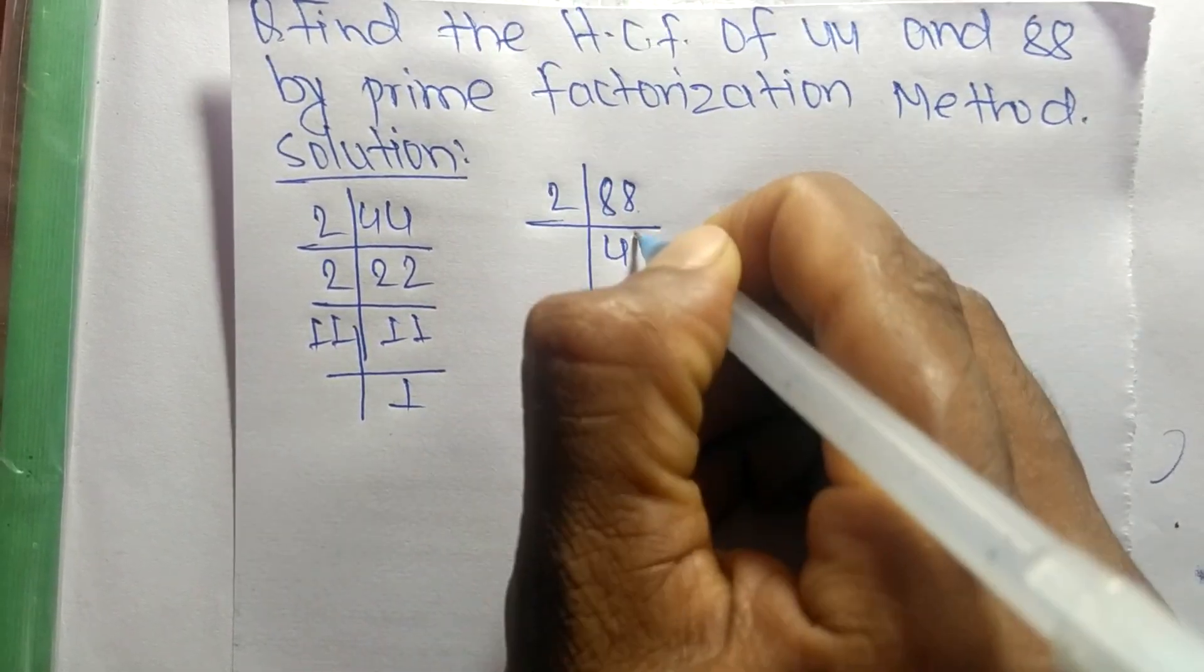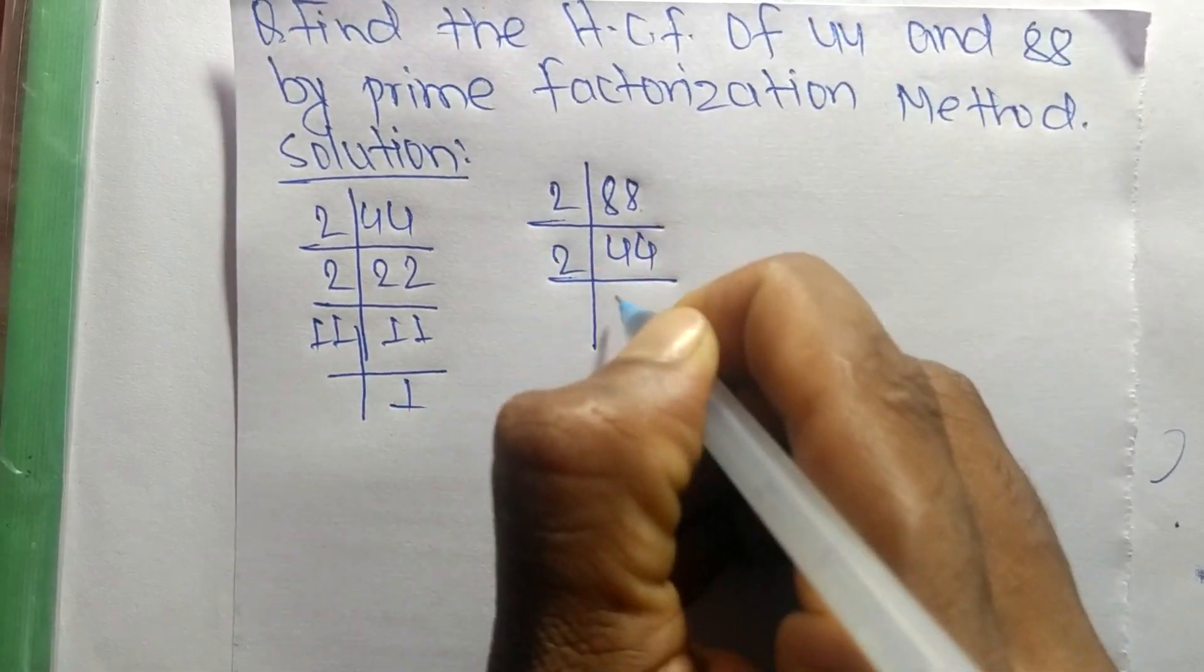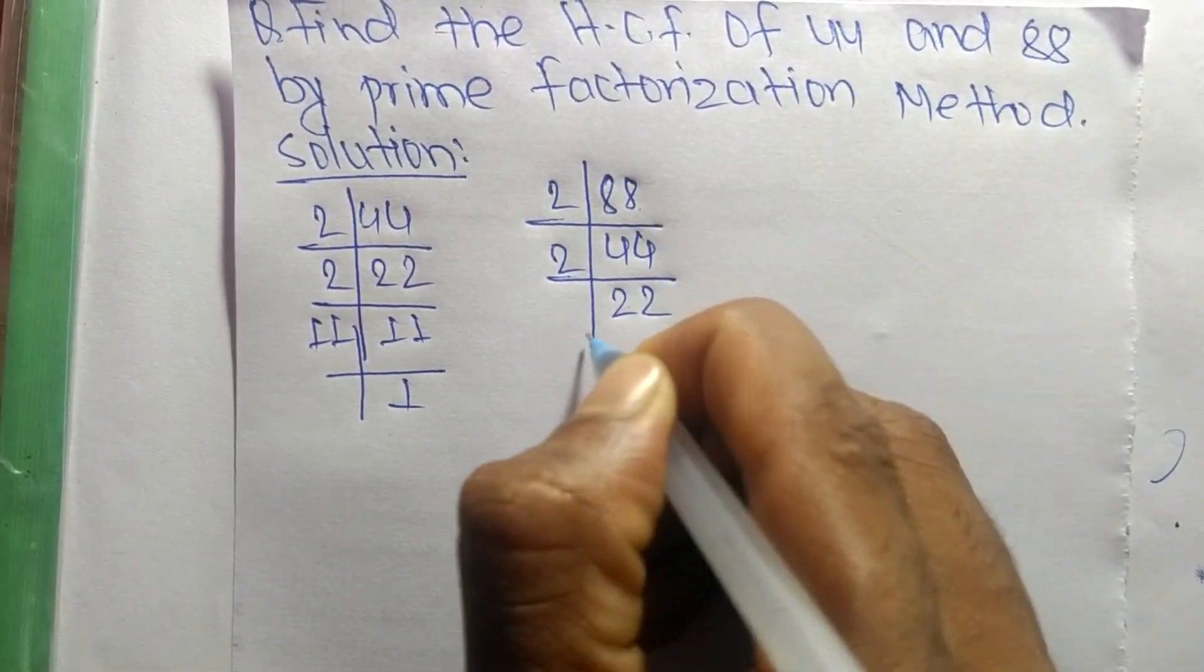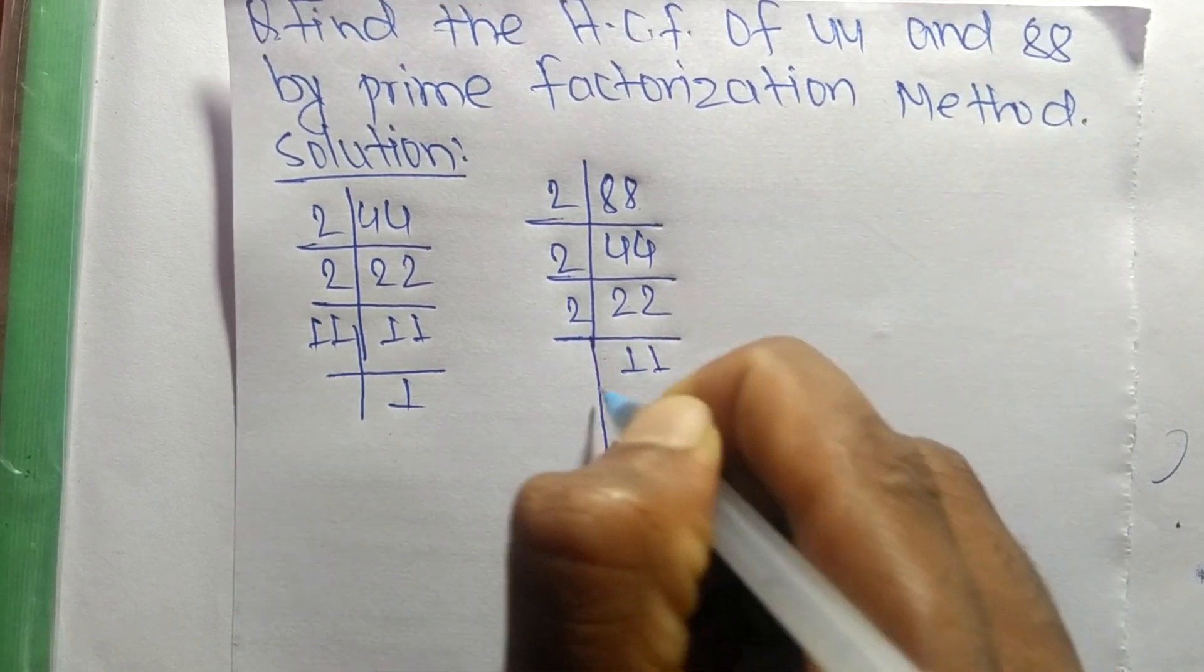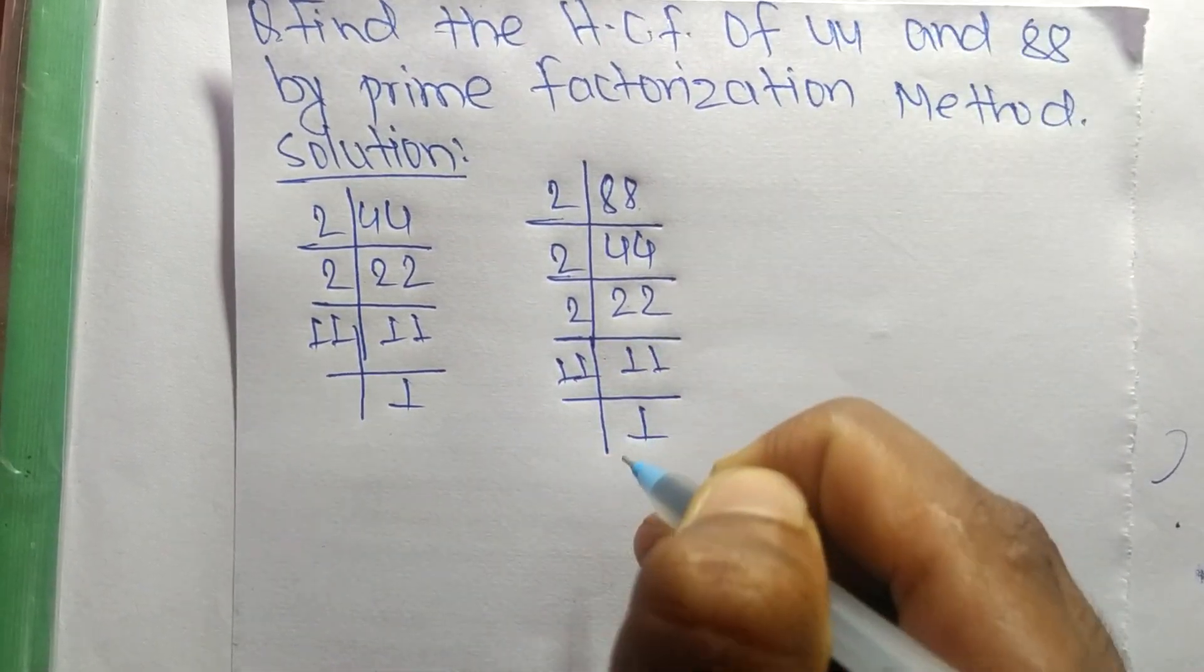2 times 22 equals 44, 2 times 11 equals 22, and 11 times 1 equals 11.